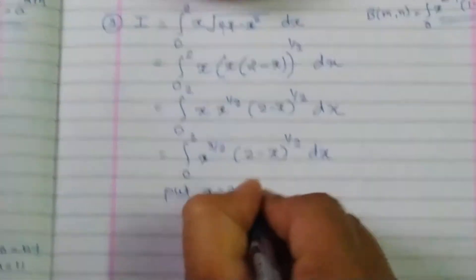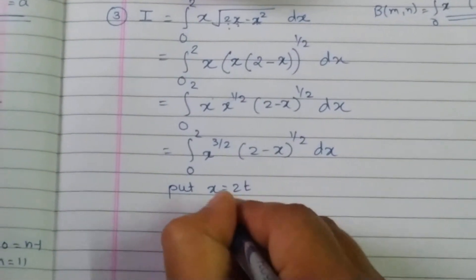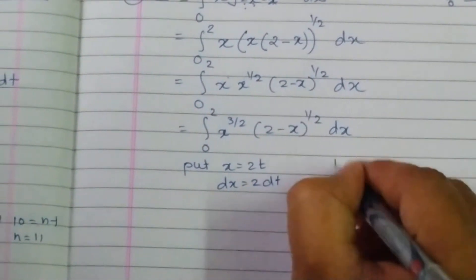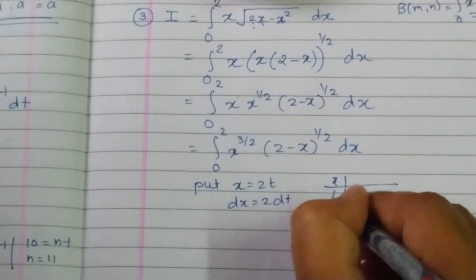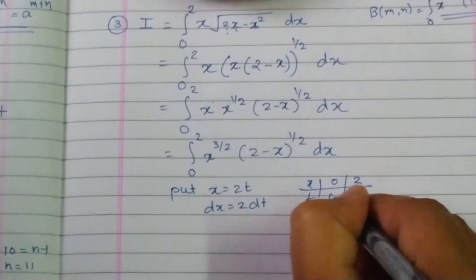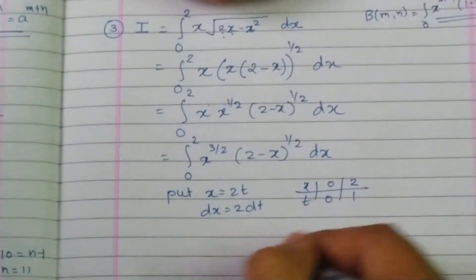Put x is equal to 2t. Therefore dx is equal to 2 times dt. What is the change in the limits? When x is 0, t is 0. When x is 2, t will be 1.